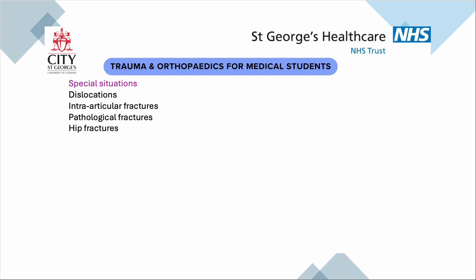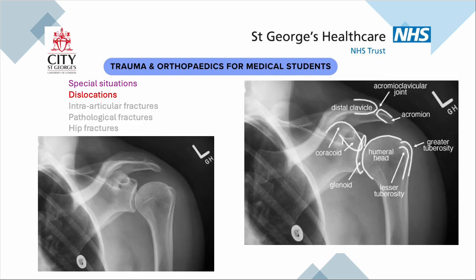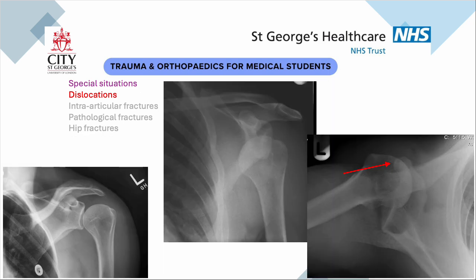Now there are some special things: dislocations, intra-articular fractures, pathological fractures and hip fractures. Dislocations can be difficult — the most common is the shoulder. On a classic AP x-ray you can see the humeral head is not pointing at the glenoid, therefore there is a dislocation. You need another view to work out whether it's in front or behind. On a second x-ray, the red arrow points to the tip of the coracoid bone — we know the coracoid is at the front, and therefore the humeral head is next to the coracoid, so this is an anterior dislocation. You can't comment on the direction of a dislocation until you've got that second view.